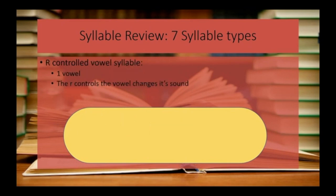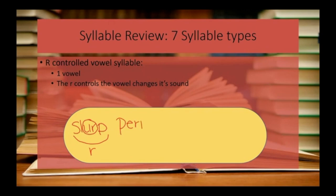When we look at R-controlled vowel syllables, we're looking at a syllable that has one vowel and the R controls the vowel so it changes its sound. For example, in the word slurp, the U is controlled by the R to make the ER sound. We could also have a word like permit, which is a two-syllable word. The first syllable has an R-controlled sound, ER, and the second syllable is a closed syllable.